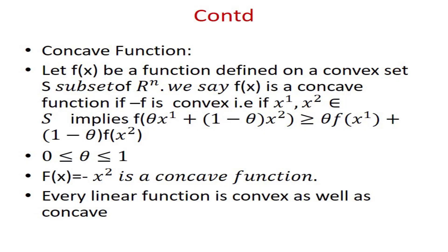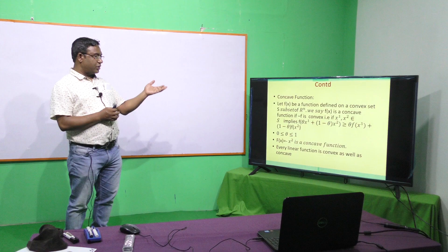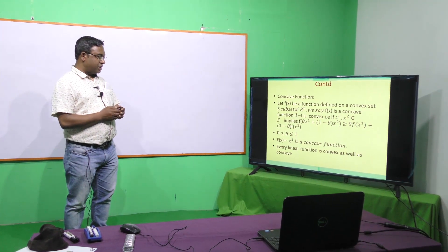A function f(x) is a concave function if −f(x) is convex. In this case, f(θx1 + (1−θ)x2) ≥ θf(x1) + (1−θ)f(x2), for θ between 0 and 1. For example, f(x) = −x² is a concave function. Note that every linear function is both convex and concave.